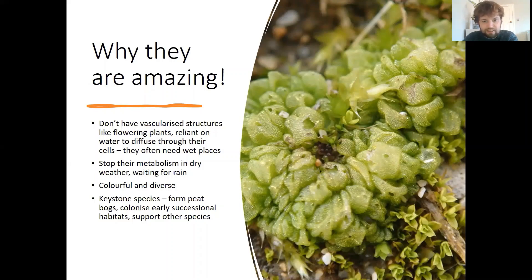Throughout this presentation and throughout the course, I hope you see that bryophytes are really colourful and diverse and they aren't just these green smudges that you find in lawns and on your roof. Bryophytes are really important keystone species. They are the key component for forming peat bogs, they colonize early successional habitats allowing other species to colonize as well, and they also support other species including specialist invertebrates and fungi.